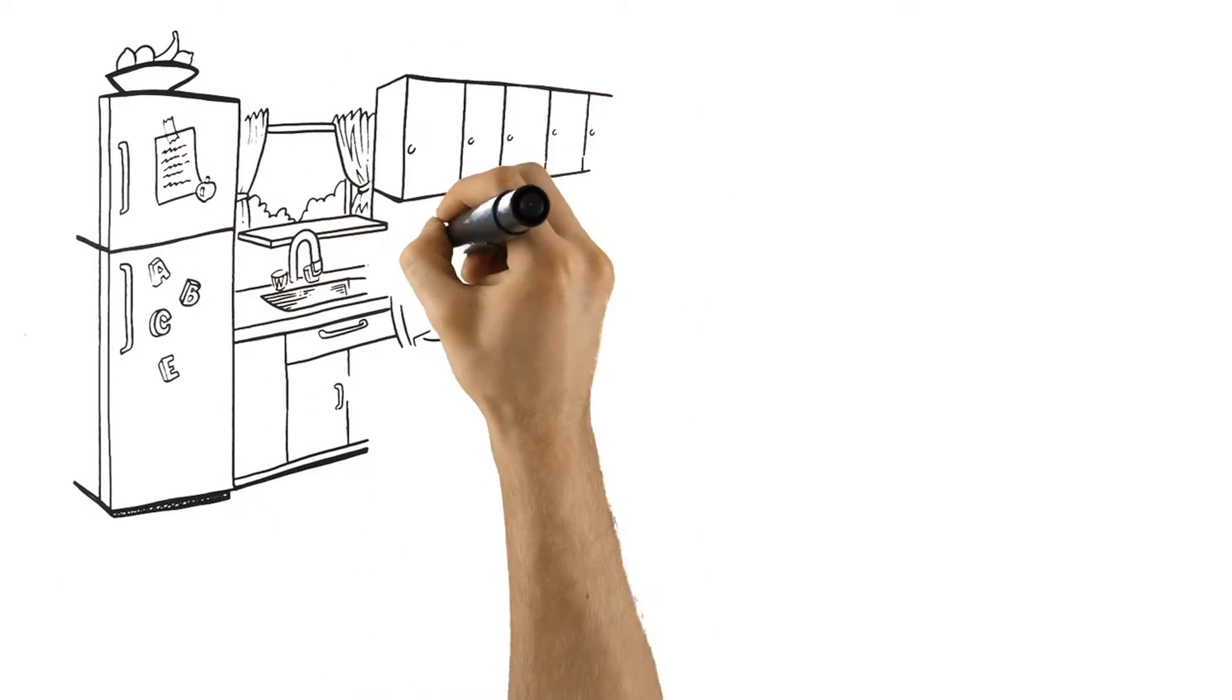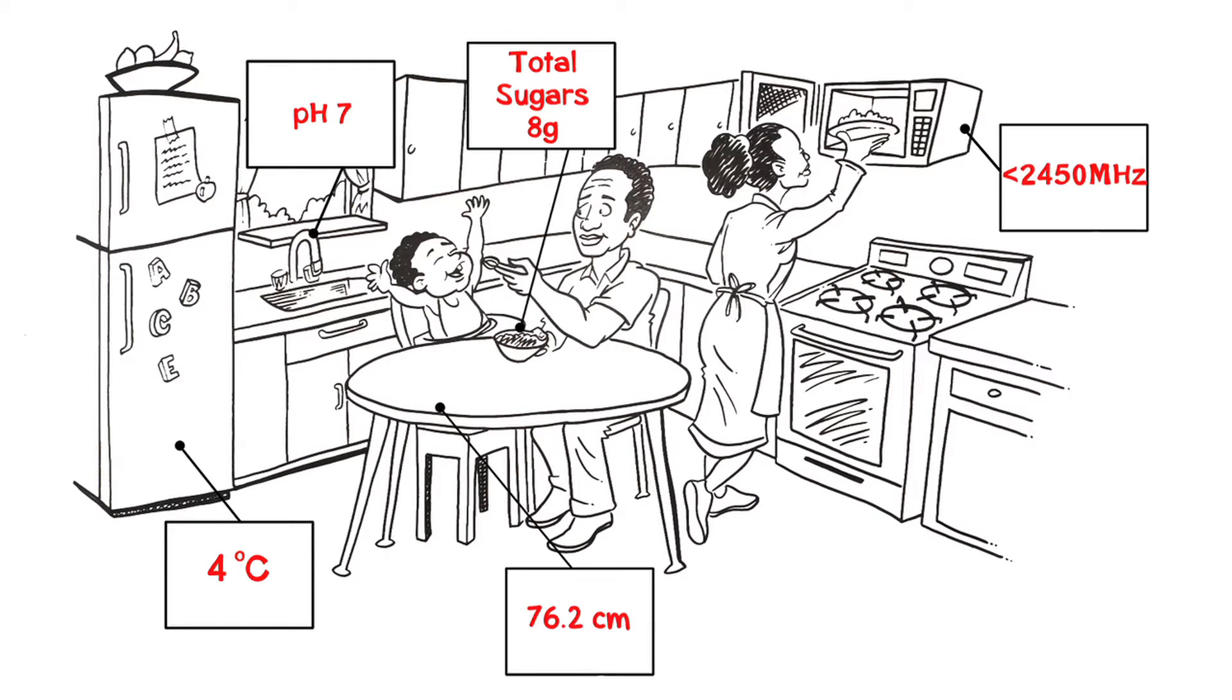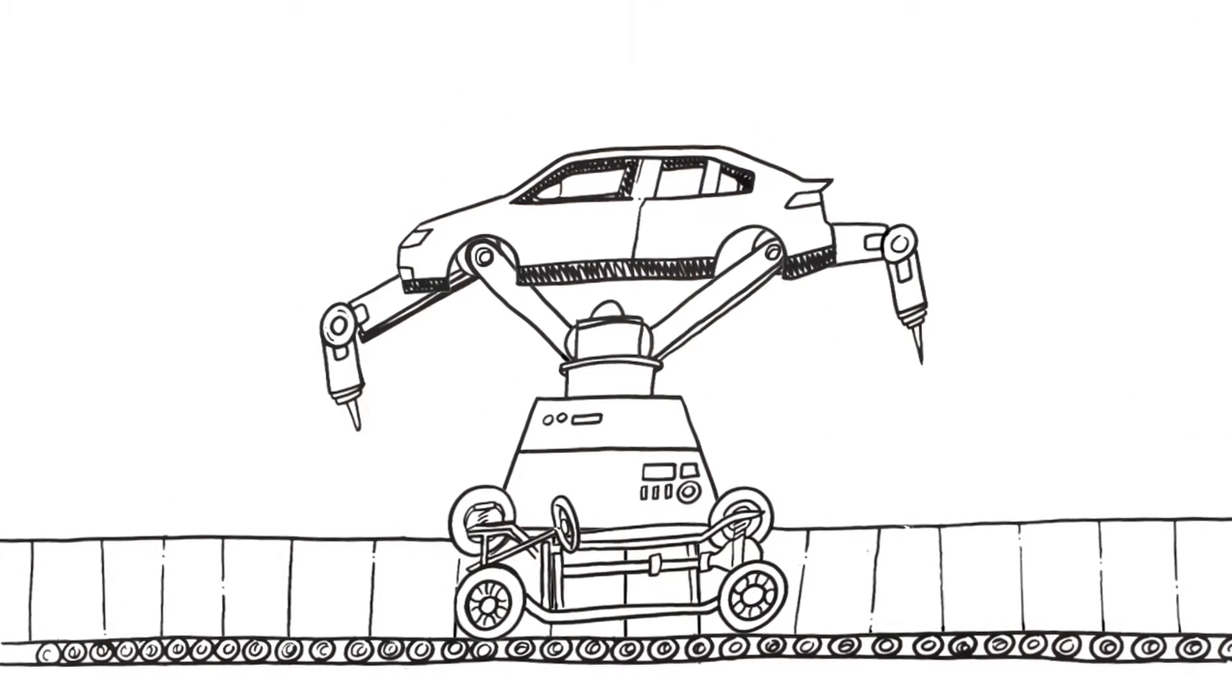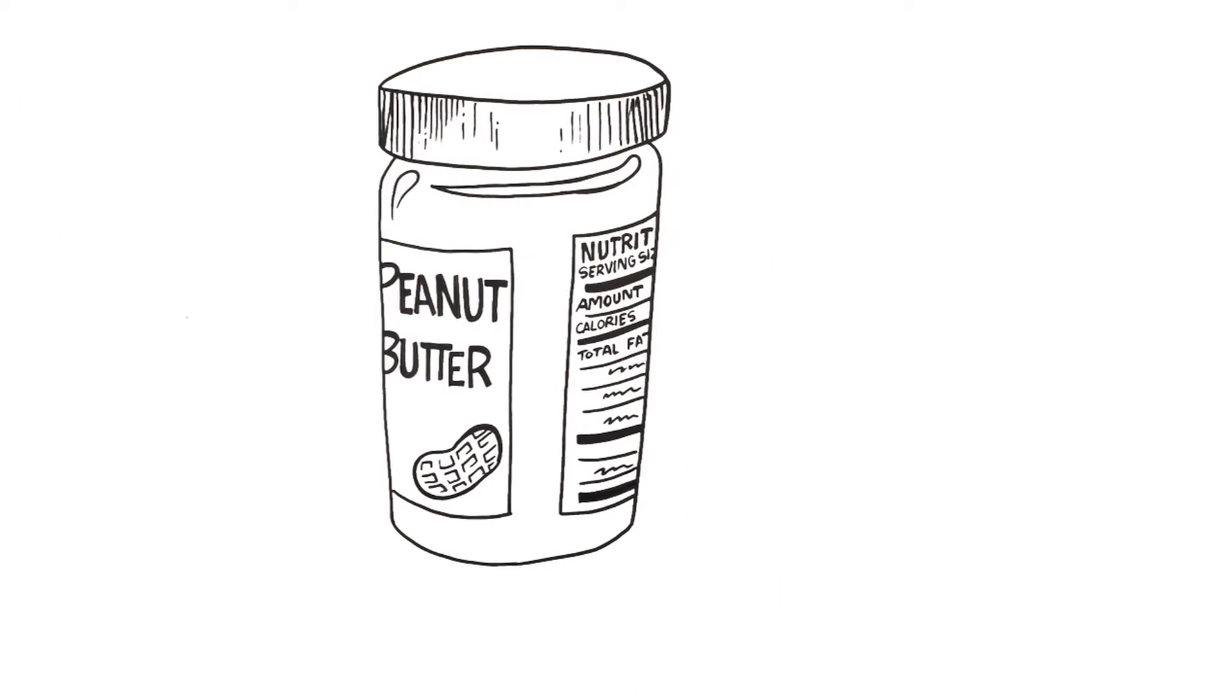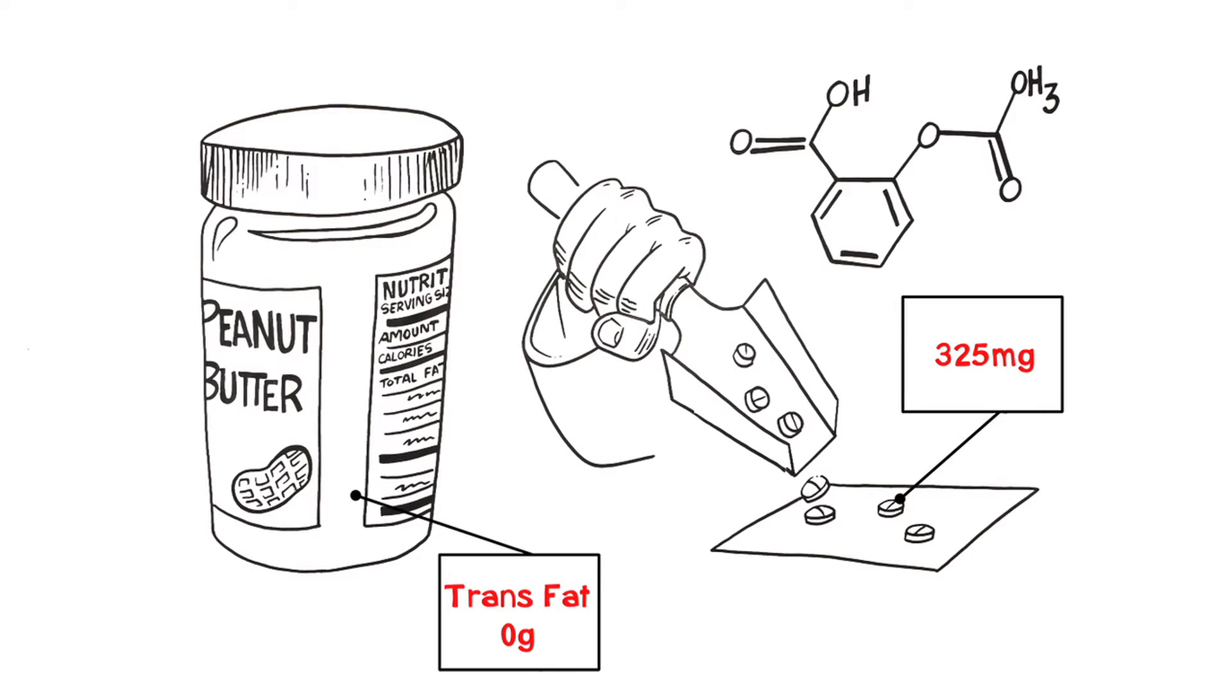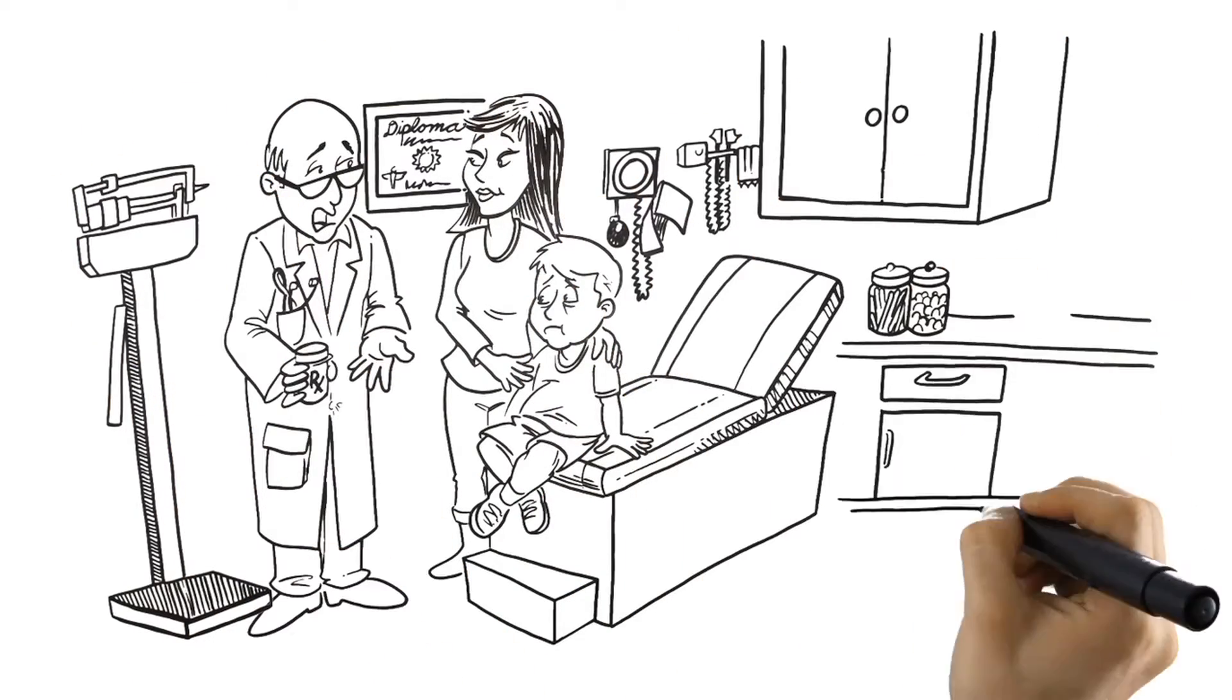The truth of the matter is that measurements permeate every aspect of our lives. From how we make things, to how we sell things, how we regulate things. And those NIST measurements underpin the trust and confidence in that entire system.